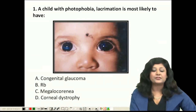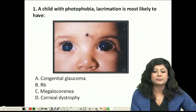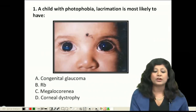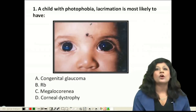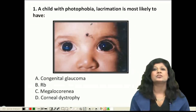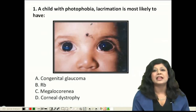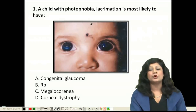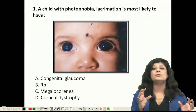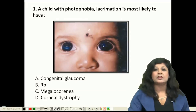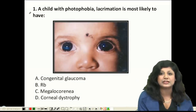In question number one, we are given a visual of an infant with photophobia and lacrimation. Looking at this visual, what is prominent here is a blue baby. Whenever you see a blue baby, the first thing that should come to mind is a blue sclera, giving a bluish hue. Here we have photophobia and lacrimation along with the blue sclera. Let's see how to approach this type of question.